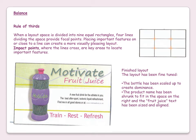This is the finished layout for the water bottle. The layout has been fine-tuned. The bottle has been scaled up to create dominance because it's the largest item on the page. The product name has been shrunk to fit in the space on the right, and the fruit juice text has been sized and aligned. There's a lot more going on: strong alignment along the right-hand edge of 'motivate', 'fruit juice', the body text, and 'refresh'. Depth is created by lines going behind the water bottle and behind the motivate fruit juice text, making it a very good layout.